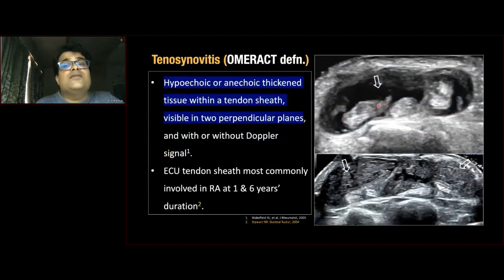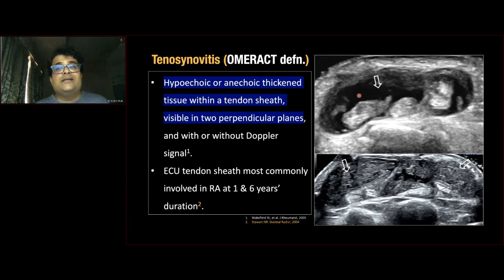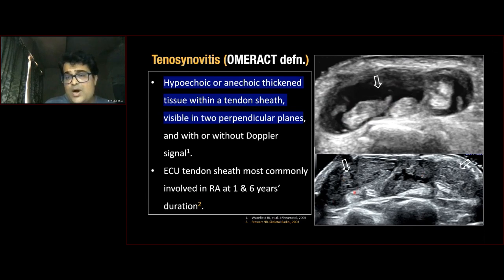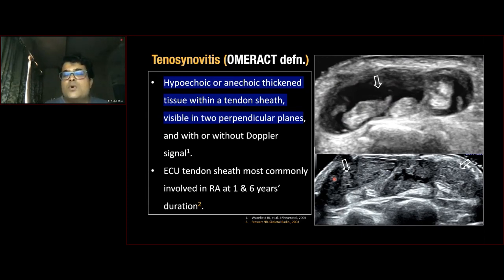Coming to tenosynovitis. According to OMERACT, it is defined as hypoechoic or anechoic thickened tissue within a tendon sheath, which may be anechoic or echogenic, must be seen in two perpendicular planes, and may or may not show Doppler signal. Shown are two cases: one with multiple tendons and predominantly effusion with mild synovial thickening in the tendon sheath, and another RA patient with marked nodular synovial tissue. The extensor carpi ulnaris tendon sheath is the most commonly involved tendon in RA and warrants close attention.